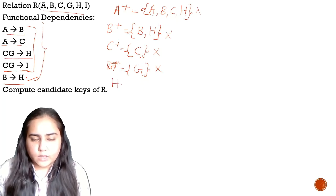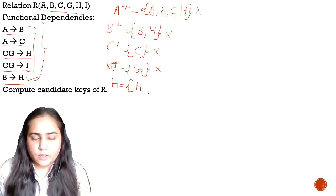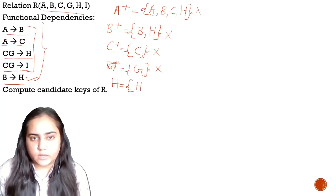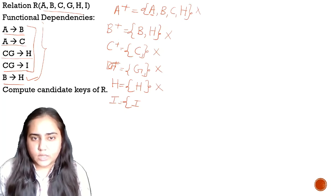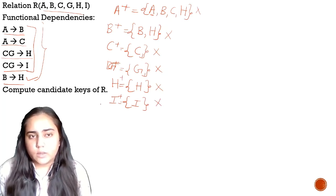Next I have H. I can add H itself, but there is no functional dependency that has H alone on the left side, so H is not a candidate key. Next we have I. I can add I itself, but there is no functional dependency containing only I, so the closure is just I. I is also not a candidate key. When you have exhausted all possibilities with single attributes, you will try with two attributes.